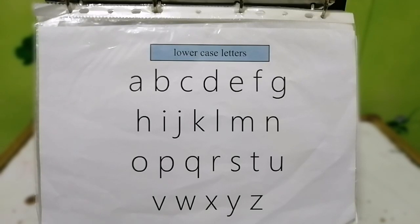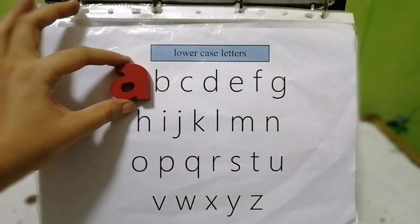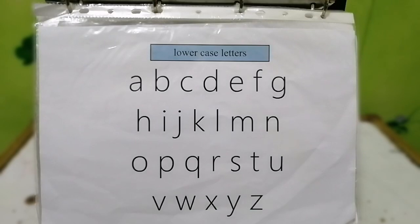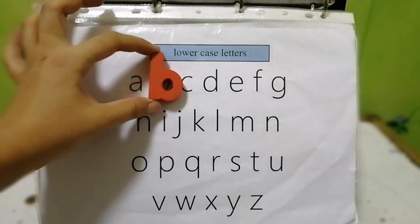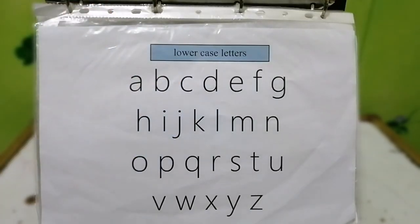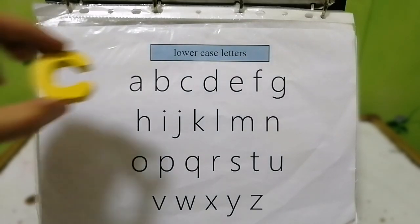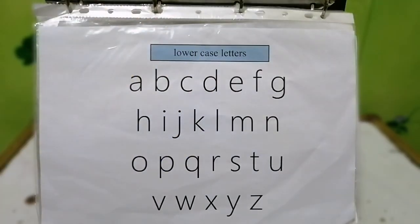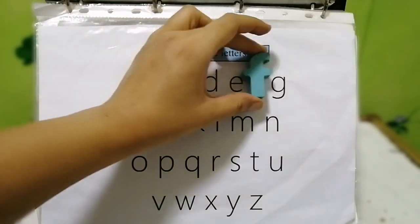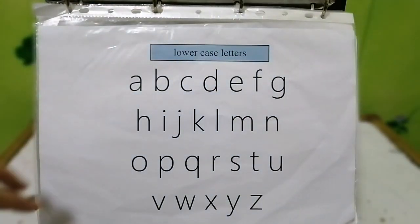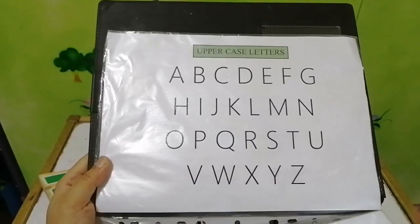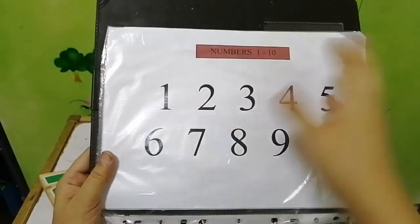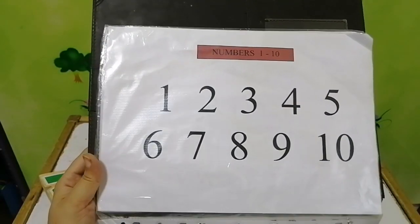On the very first page I have introduced alphabet lowercase letters. You can play a game with your kids — give them a sound and they will match where that sound is. Then sound K, sound, and so on. The next page has alphabet uppercase letters and numbers from 1 to 10.